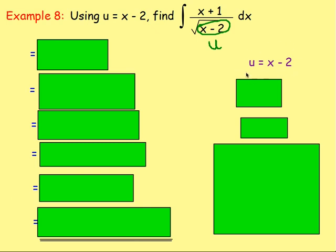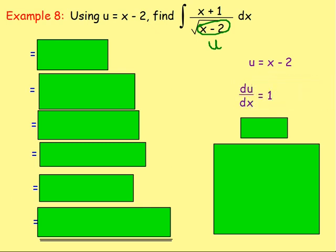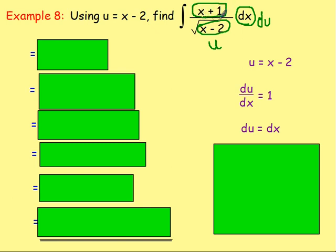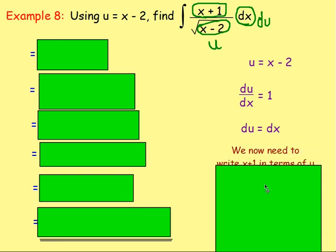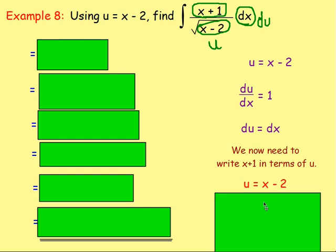We differentiate. Differentiating u with respect to x gives us 1. Multiply both sides by dx, and therefore du equals dx, so we know dx is equal to du — we can replace that with du. What we're left with in terms of x is this x plus 1, and we need to know what x plus 1 is. Using the substitution u equals x take away 2, we can manipulate it to easily find what x plus 1 is equal to.